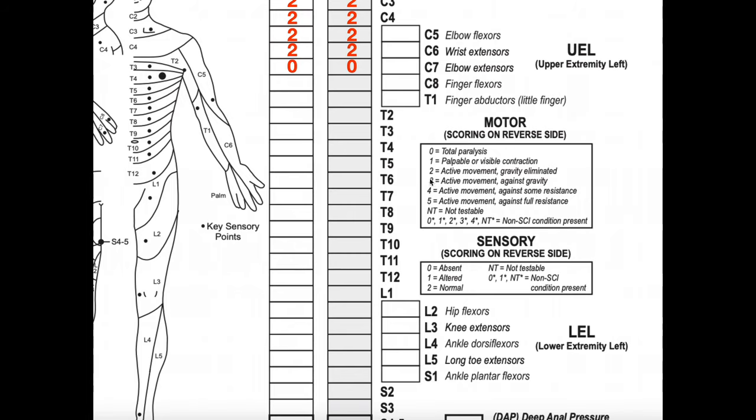By definition on the ASIA Impairment Scale, a complete spinal cord injury gets a grade of A. For incomplete injuries, we use grades B through E, which we'll cover in two videos. When we have a complete injury, we figure out the zone of partial preservation. Some sources say to do this for incomplete injuries too, but for now we'll do the zone of partial preservation only for complete spinal cord injuries.